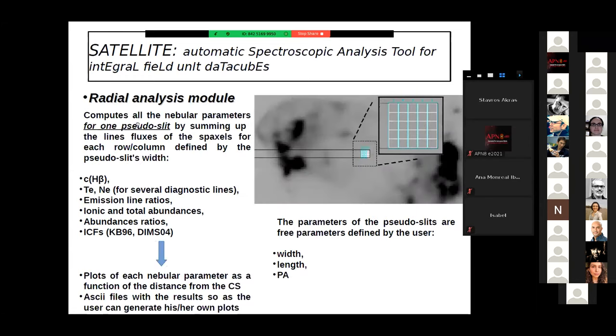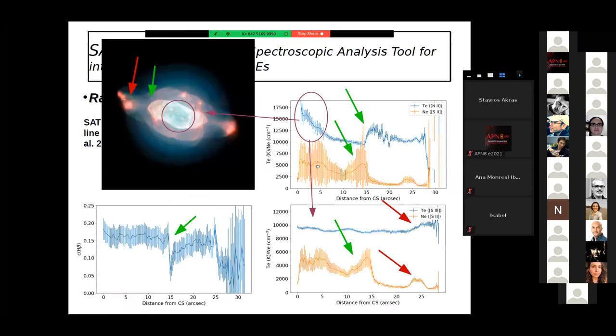The radial analysis module: in this module, the code computes the line intensity and fluxes in one specific or several slits starting from closer to the central star. For one row of pixels, sum up all the line fluxes from these five pixels, for example, performs a spectroscopic analysis, computes all the physical parameters, and then moves to the second column, the third column, the fourth column, etc. And then you can have a plot of each nebular parameter as a function of the distance from the central star. Again, the width, length, and position angle of the pseudo-slit are free parameters in the module and the user can select what he wants.